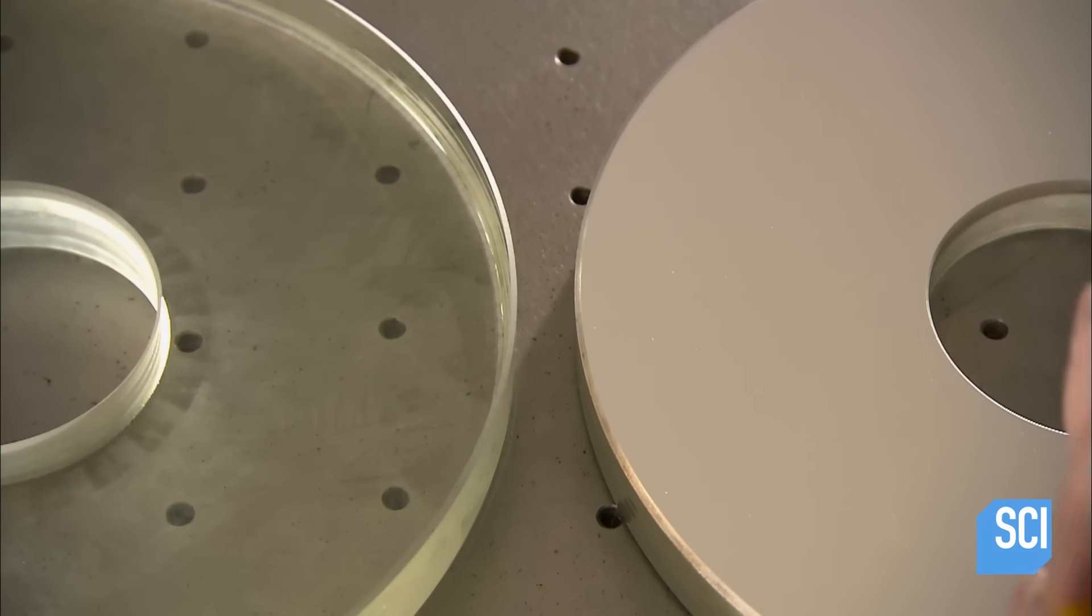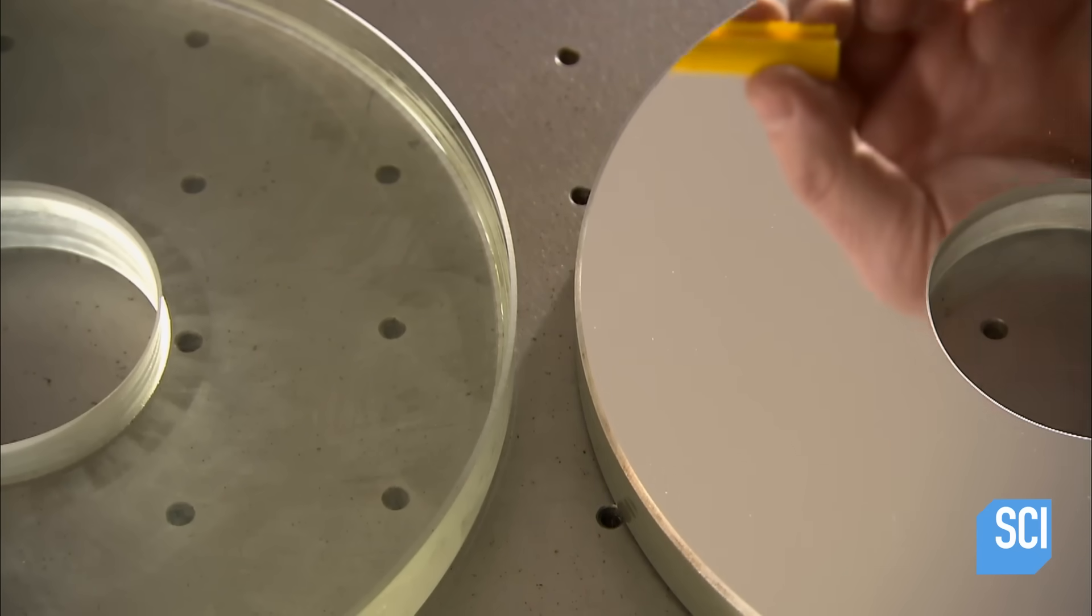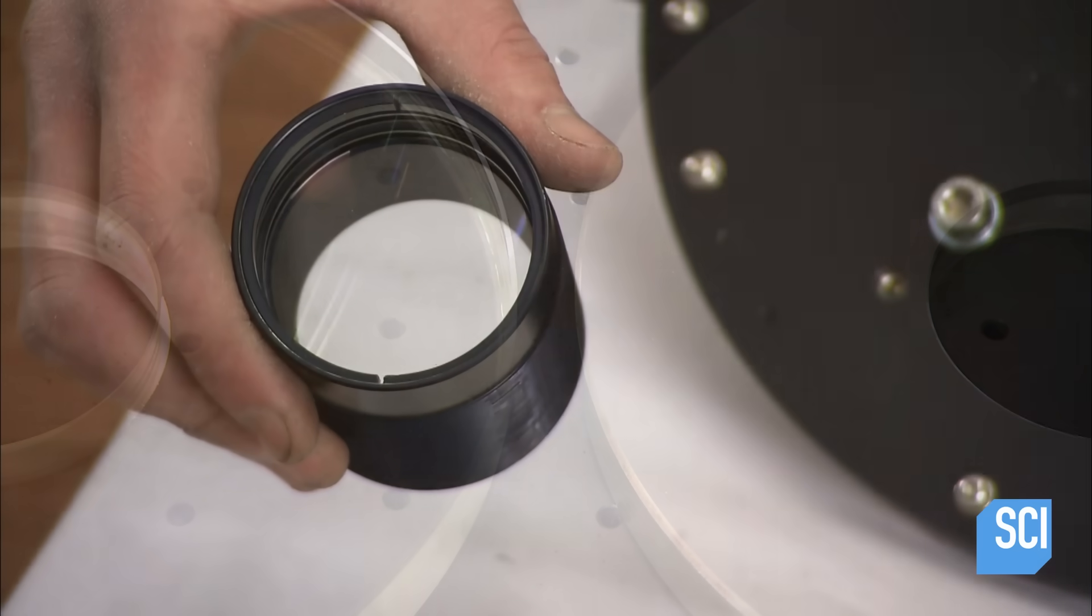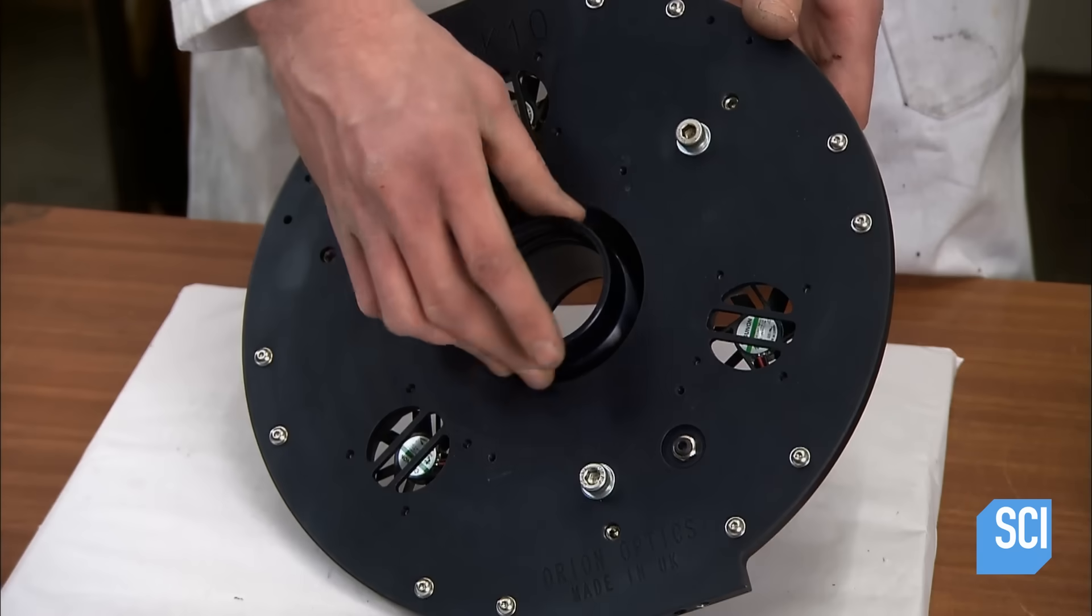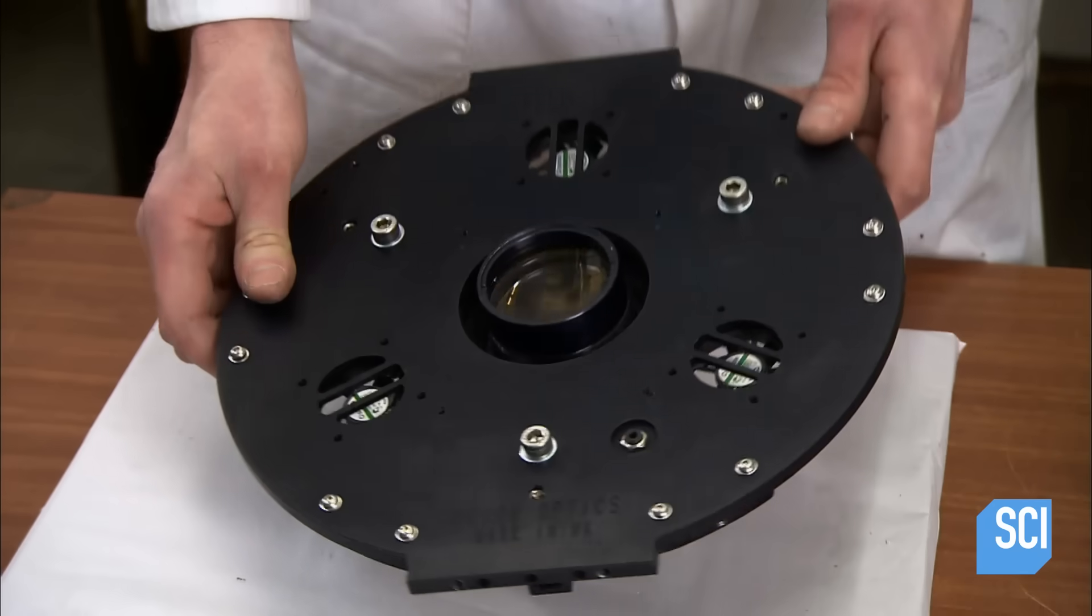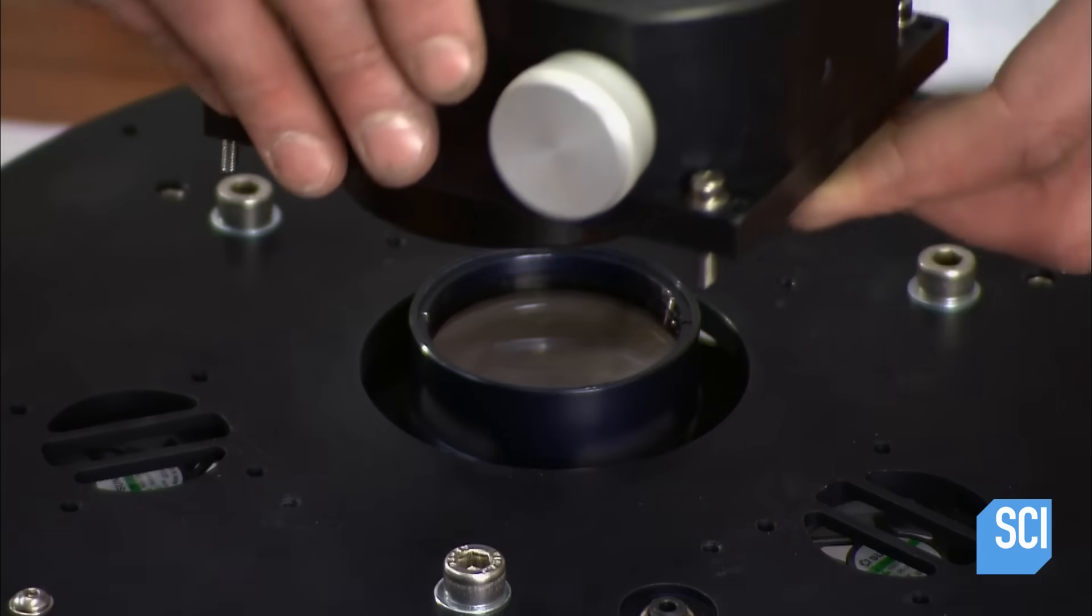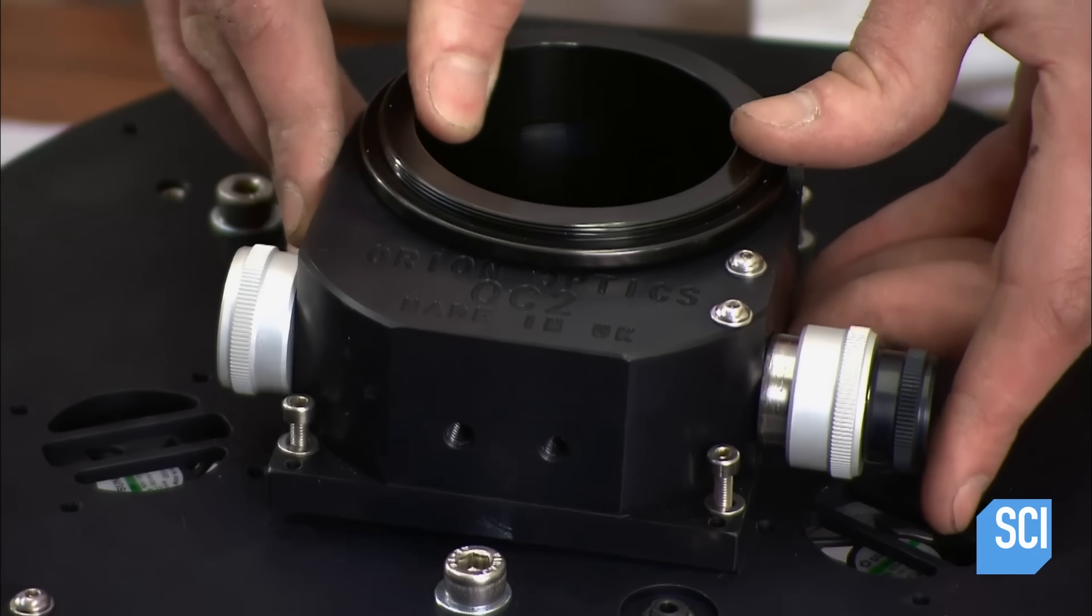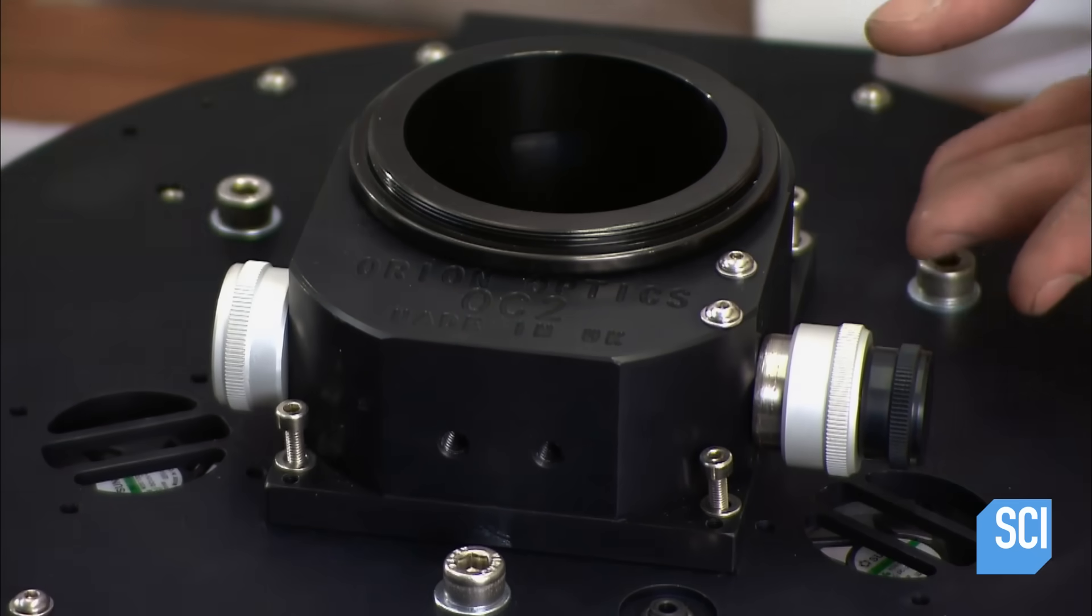This telescope mirror is now ready to reflect light from the stars and planets in the sky. Next, a technician screws lenses into the metal housing for the primary mirror. He adds a mount mechanism for the eyepiece, complete with knobs for focusing.